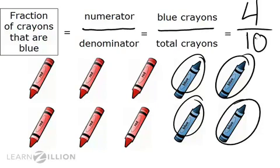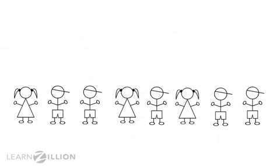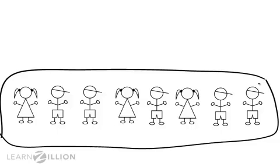Let's see how this works in a problem. There are students waiting for the bus. What fraction of the students are boys? First I would decide what my set is. Remember, a set is like a group. I have a set of students. The total number of students is going to be my whole. My total number of students is one, two, three, four, five, six, seven, eight. I could think about each student as an equal part out of a total of eight.